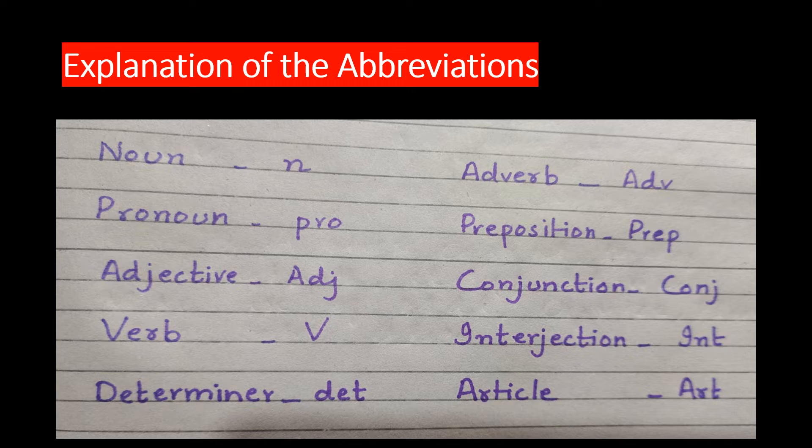For verb, there will be V. For determiner, there will be DET. For adverb, there will be ADV. For preposition, there will be PREP. For conjunction, there will be CONJ. For interjection, there will be INT. And for article, there will be ART. And for helping verb, there will be HV.